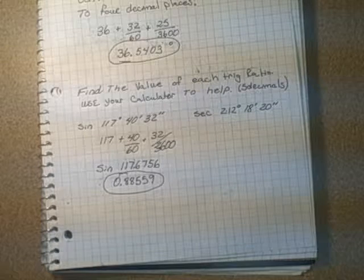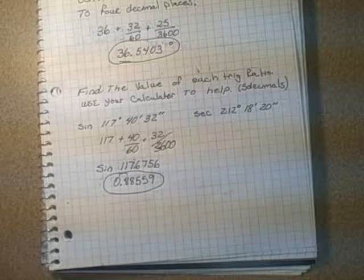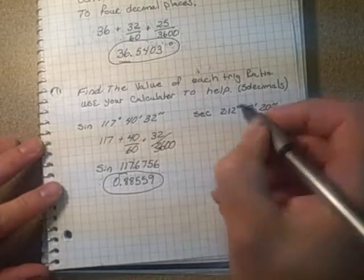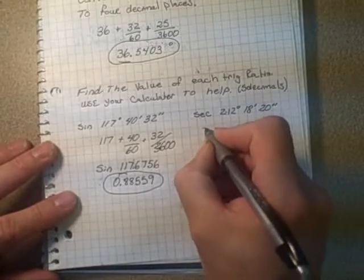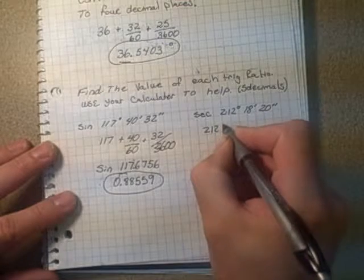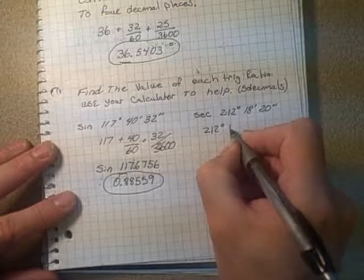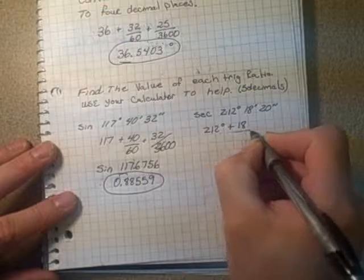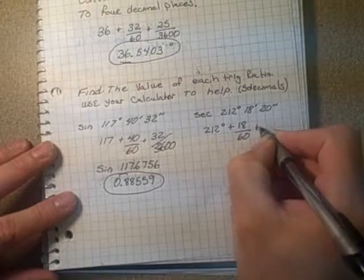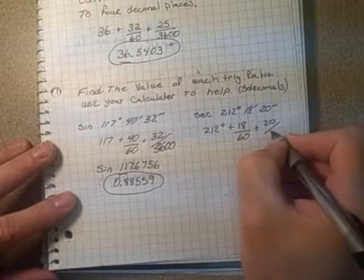Cosine is the reciprocal of secant. So all you'd have to do is convert this into a decimal number again. So go 212 degrees plus 18 over 60 plus 20 over 3600.